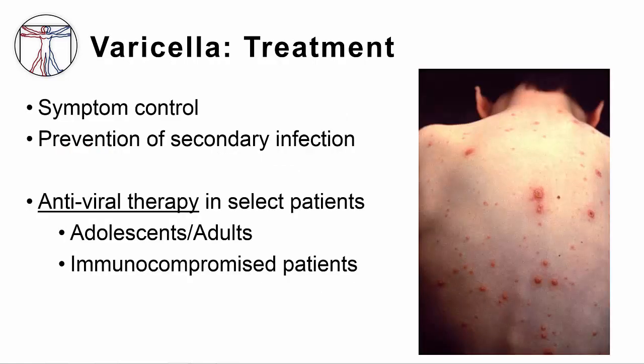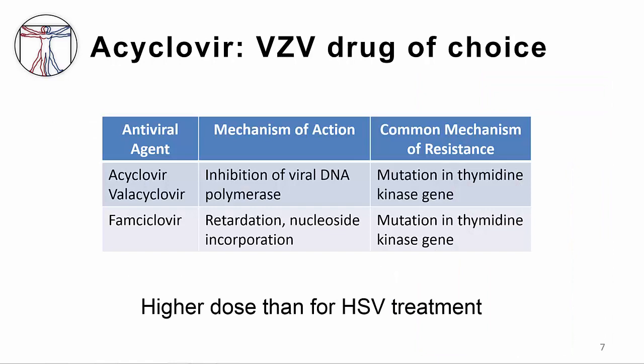The mainstay of treatment in healthy children is symptom control and prevention of complications like skin infection. An antiviral agent should be used in patients with increased risk for poor outcomes due to VZV infection, including adolescents, adults, and immunocompromised patients. The drug commonly used for VZV treatment is acyclovir. It works by inhibiting viral DNA polymerase, but VZV is less sensitive to acyclovir than HSV, so we have to use a higher dose.